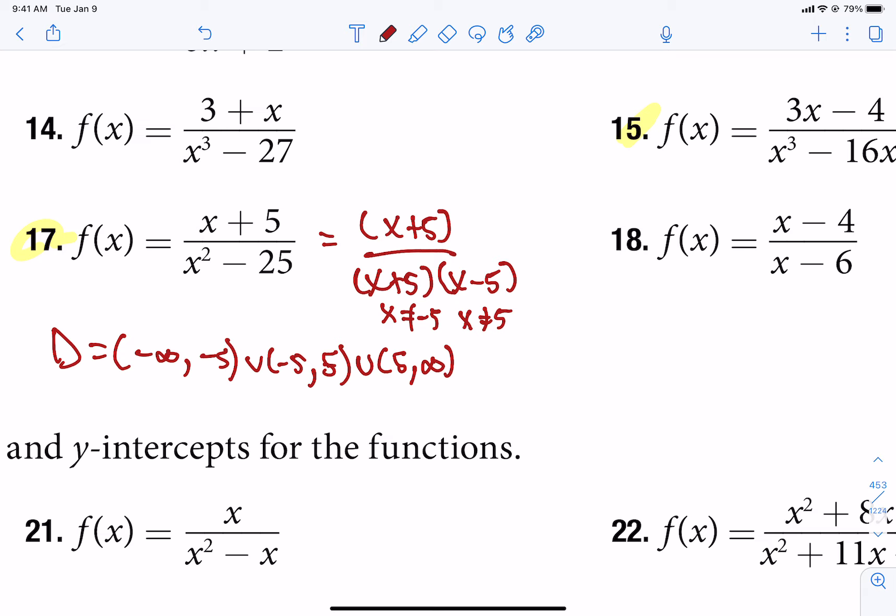You'll notice that I have a gap here at negative 5 and a gap here at positive 5. Now why is there a gap? You'll notice that the x plus 5s are a matching factor in top and bottom. So at x equals negative 5, we have a hole. At x equals positive 5, since there isn't a match on the top, we have a vertical asymptote.